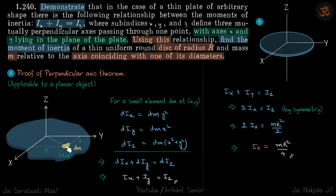So the square of this distance. Now we can see that dIx plus dIy is equal to dIz.